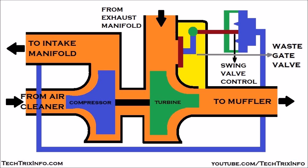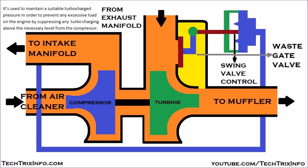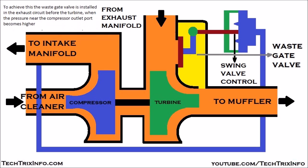Now let's see specifically what the role of a wastegate valve is. A wastegate valve is used to maintain a suitable turbocharge pressure in order to prevent any excessive load on the engine, by suppressing any turbocharging above the necessary level from the compressor. A specified turbocharger and engine can only hold a particular amount of compressed air — exceeding that can cause malfunction and reduce efficiency. To regulate this pressure, the wastegate valve is installed in the exhaust circuit before the turbine.